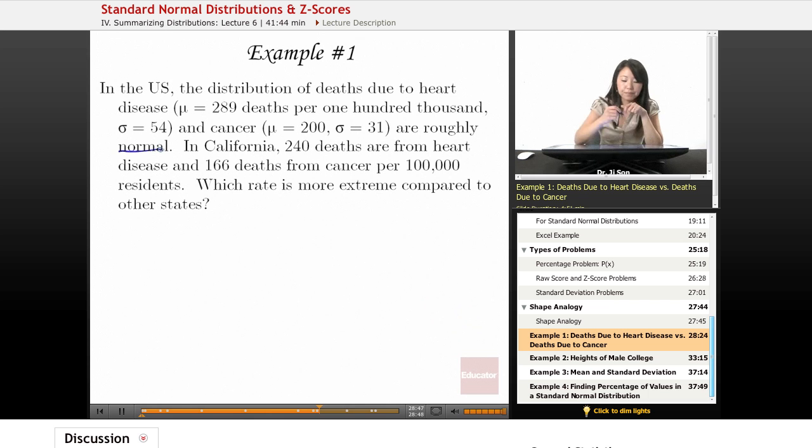That's very important. So we know that we could use our normal distribution stuff. In California, 240 deaths are from heart disease and 166 deaths are from cancer per 100,000 residents. Which rate is more extreme compared to the rest of the states, the average for the US?